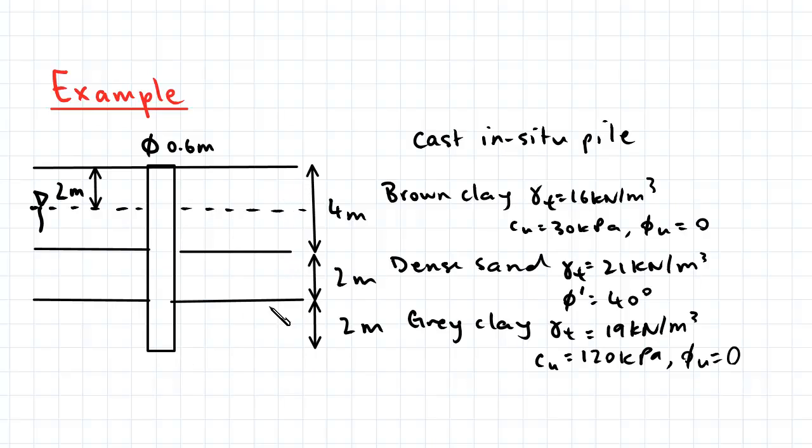We have three layers of soil here. The top layer is brown clay with a thickness of four meters. The second layer is dense sand with a thickness of two meters, and the last layer is gray clay with a thickness of two meters as well.